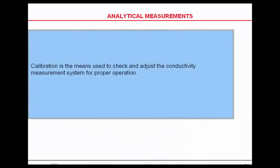Calibration is a means to check the conductivity measurement for proper calibration. It can be done two ways. If you want to check your instrument — if you're using a UDA or an APT — you simply use a resistor and then take a look at the reciprocal value. If you put a 10K resistor on an analyzer, it should read 10 microsiemens.